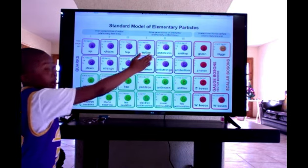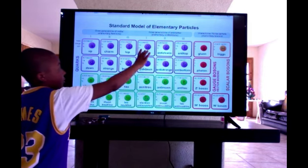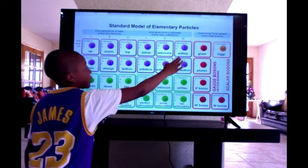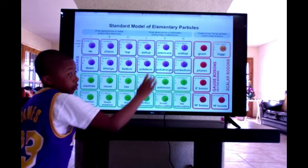And then here's the anti ones. Anti up, anti down, still a group. Anti charm, anti strange group. And anti top and anti bottom. That's all of them, but this is the regular one and this is the anti ones.